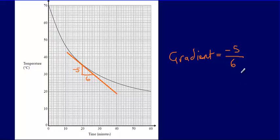So negative 5 divided by 6, which is going to give me negative 0.83 recurring.